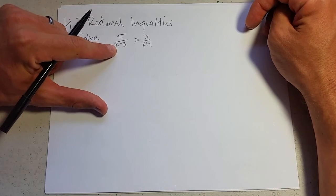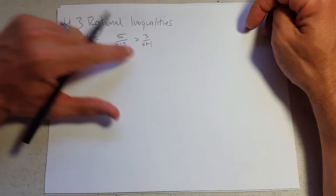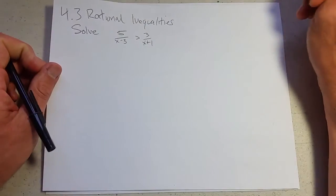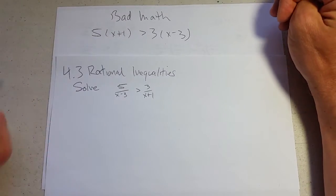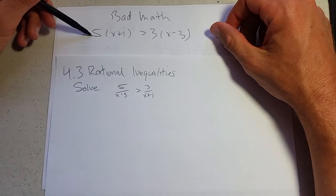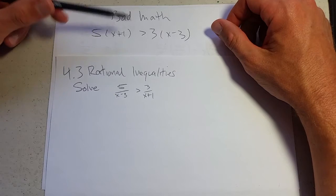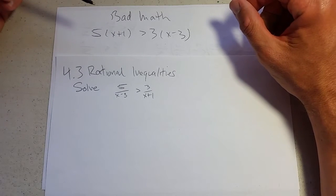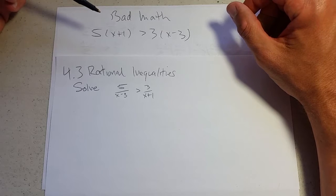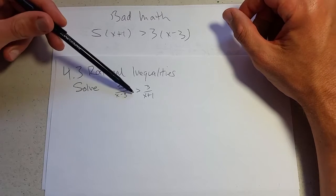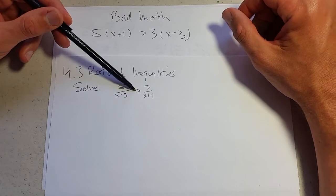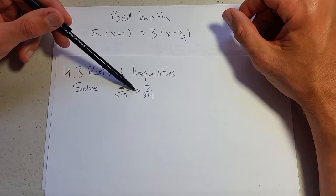So how do we do this the wrong way? It looks very tempting to multiply by the denominators, x minus 3 and x plus 1. What would this look like if I did that? It would look like this: 5 times x plus 1 is greater than 3 times x minus 3. This would be okay if there was an equal sign.